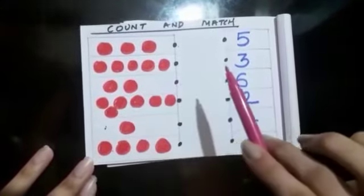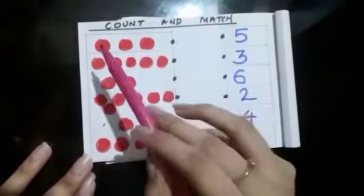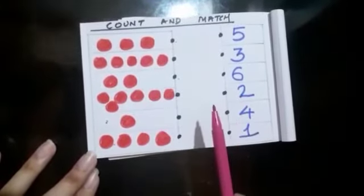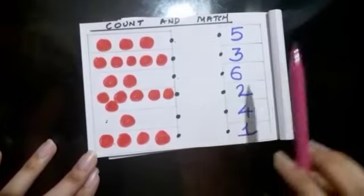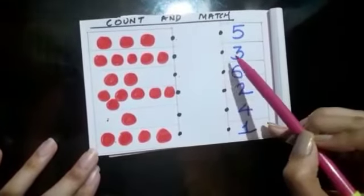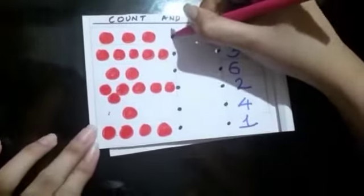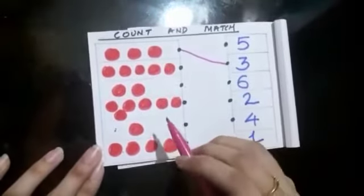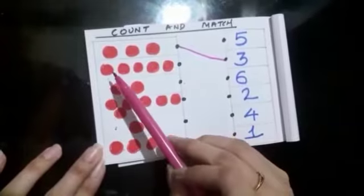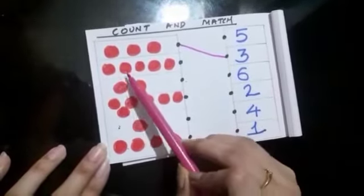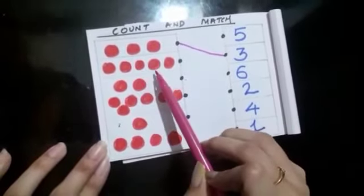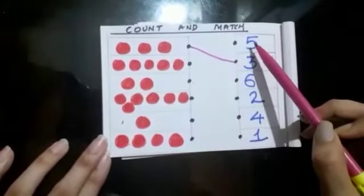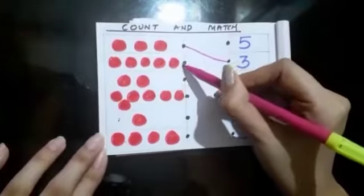Next, 1, 2, 3, 4, 5. Where is 5? Yes, 5 is there. Let's match.